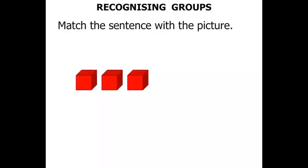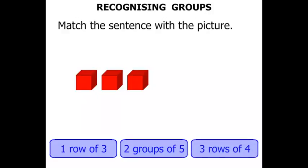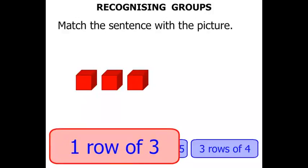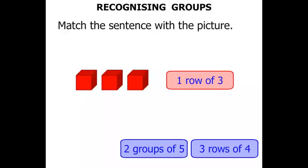Now this next one. Do we have one row of three? Or do we have two groups of five? Or do we have three rows of four? Well, simply we have one row of three, because there are three in the row.